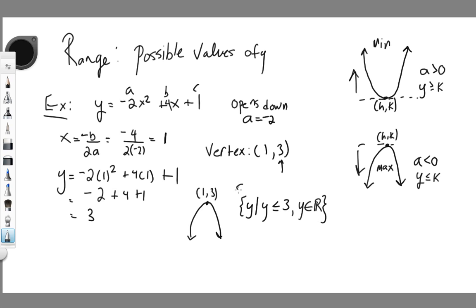So that's all you need to do. What you need to do is find whether or not the graph opens up or down. And then you need to find the y-coordinate of the vertex. Figuring out whether it opens up or down, and then find the y-coordinate of the vertex. If it opens up, it's going to be greater than or equal to that y-coordinate of the vertex. If it opens down, it's going to be less than or equal to.